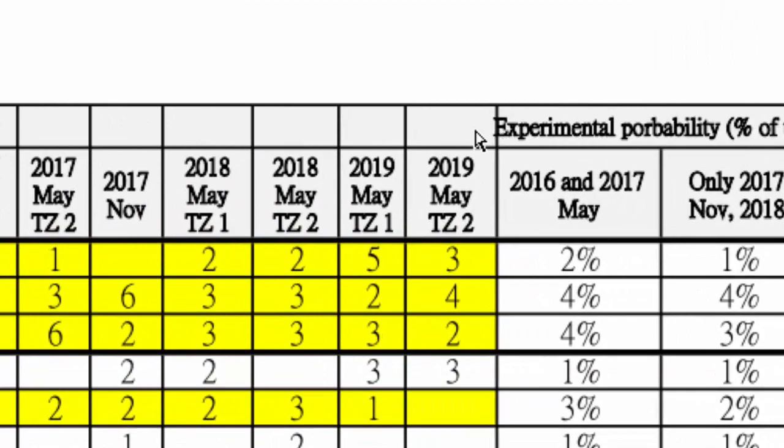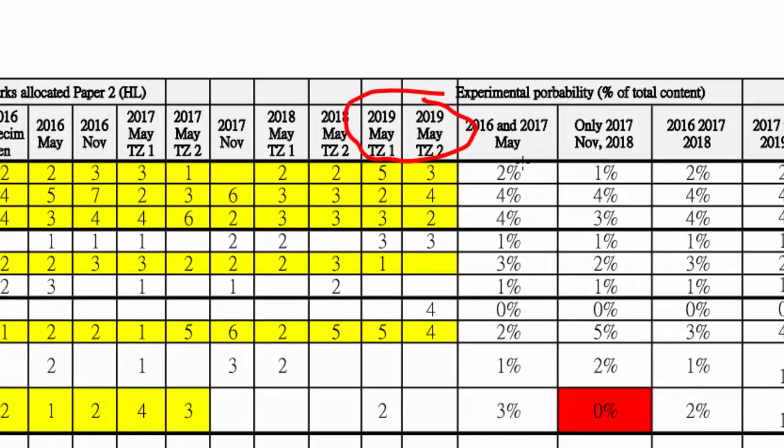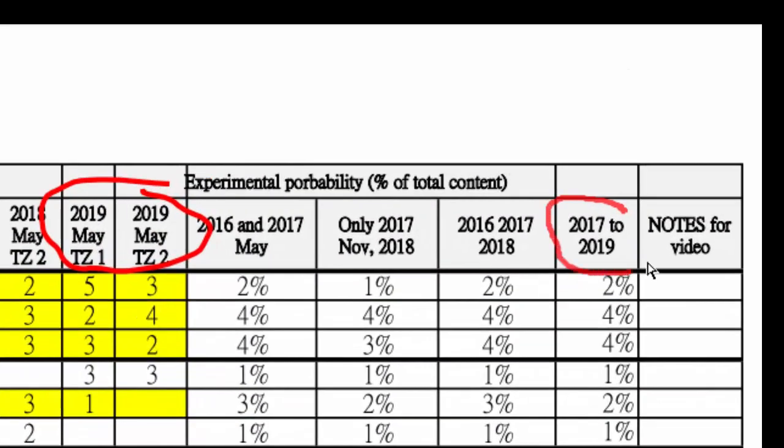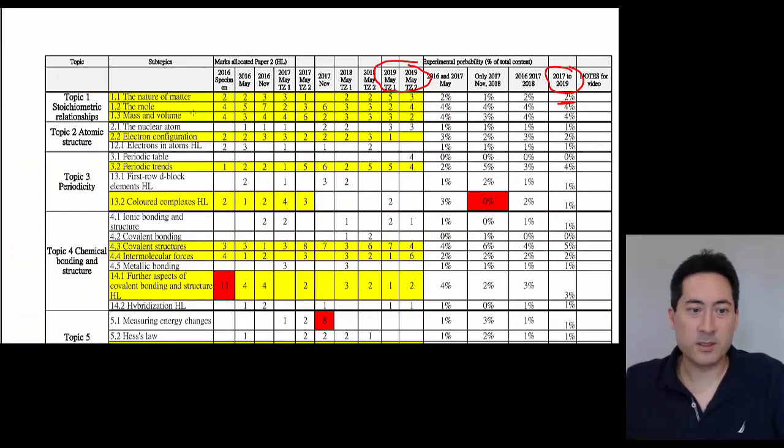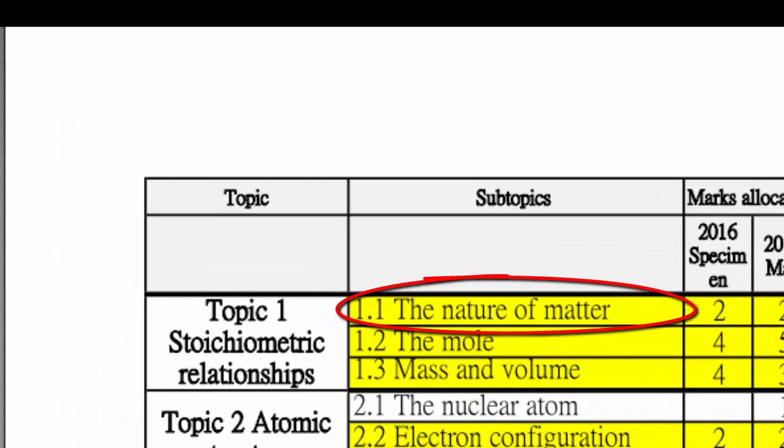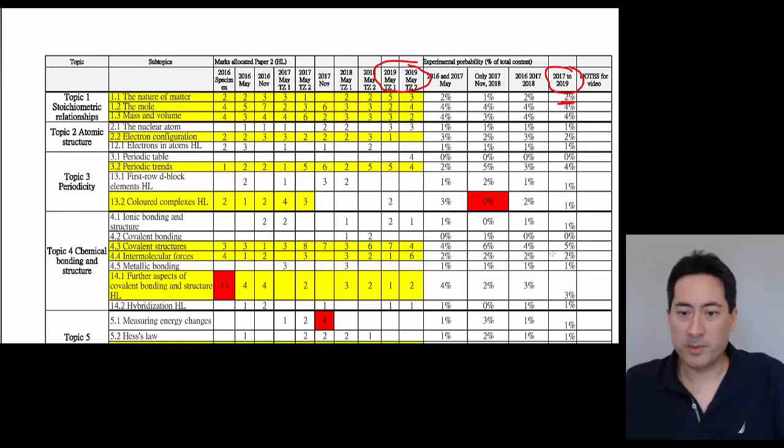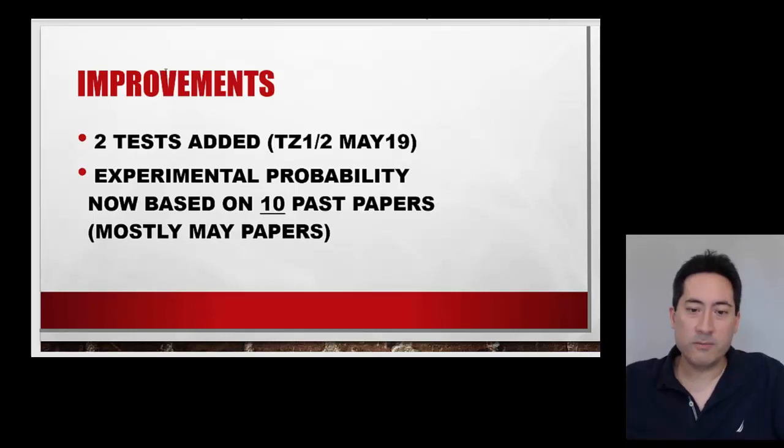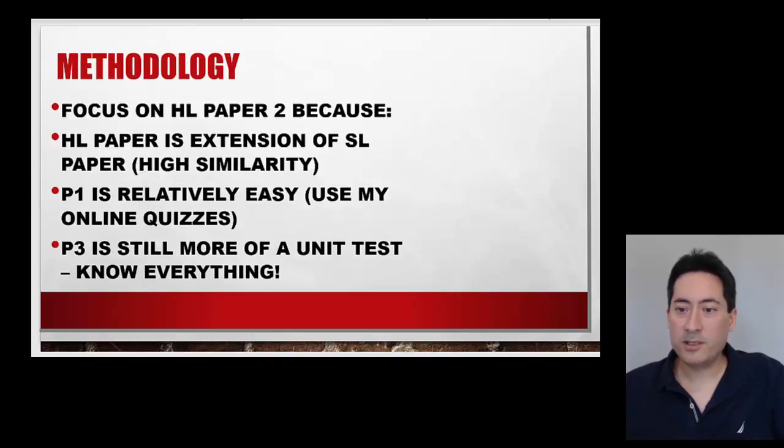What we have here is I've added these two papers, so that makes a total of ten, and what you're interested in here is I've got the percent probability for each topic. So two percent, if you want to understand that, two percent of the entire test will consist of topic 1.1, the nature of matter. If you look down all of these probabilities here, you're going to see which content you need to focus on for the exam tomorrow.